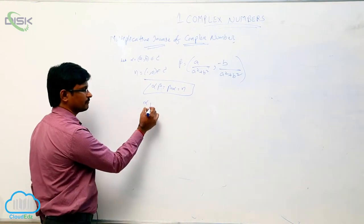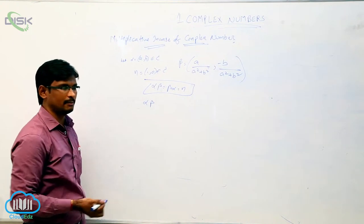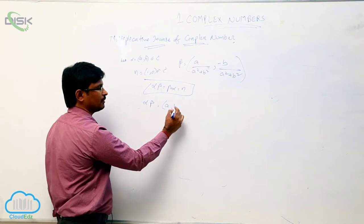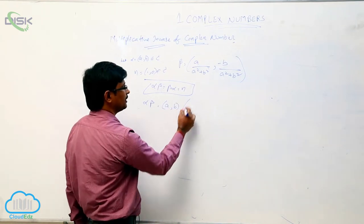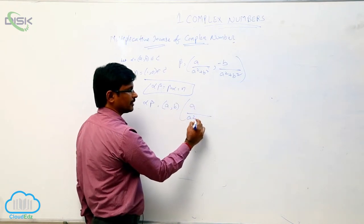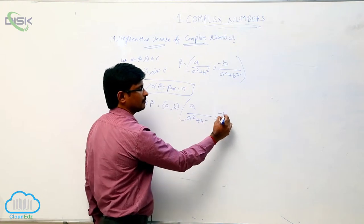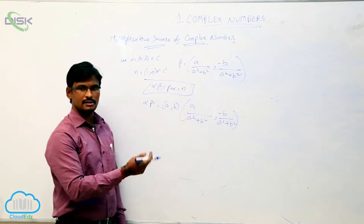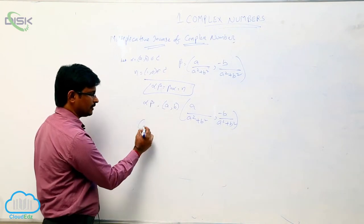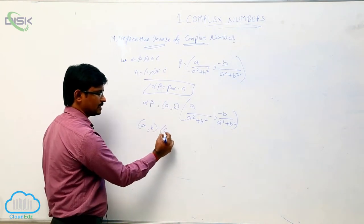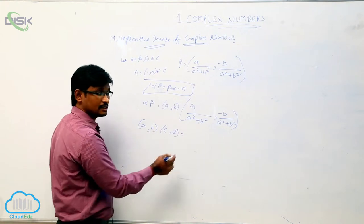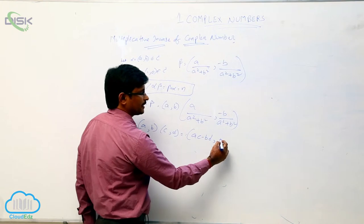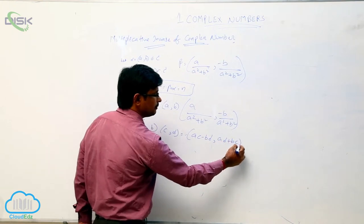We will see what is the value of alpha × beta. Here alpha = (a, b), and the value of beta = (a / (a² + b²), -b / (a² + b²)). This is a product, and we know that for two complex numbers the product is: (a, b) × (c, d) = (ac - bd, ad + bc).